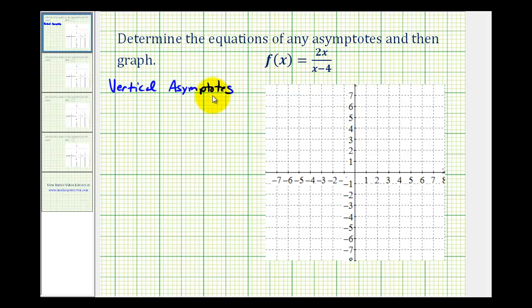The vertical asymptotes occur at the zeros of the denominator, as long as they're not also zeros of the numerator. So if we set x minus four equal to zero, we can determine the equation of the vertical asymptote. If we add four to both sides, we have x equals four, which is the equation of our vertical asymptote. Let's go ahead and sketch that.